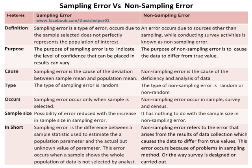Sampling error occurs only when a sample is selected. Whereas non-sampling error occurs in sample, survey, and census. The possibility of error is reduced with the increase in sample size in sampling error, whereas it has nothing to do with the sample size in non-sampling error.